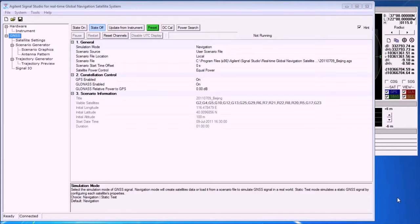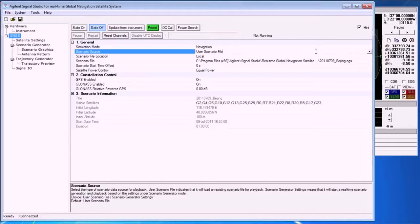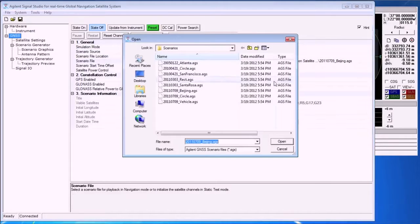Now we're looking at the Signal Studio application for GNSS. Here we can use predefined scenario files that come with the software application or build custom GNSS scenarios using the scenario generator function.